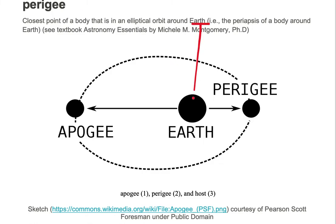So we have the earth located in our center, and we're taking a look at an object such as the moon making an orbit around the earth. The closest point of a body that is in elliptical orbit around the earth is perigee, so I'll put an x where the perigee location is.